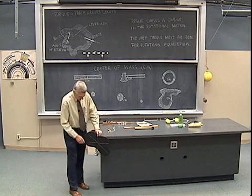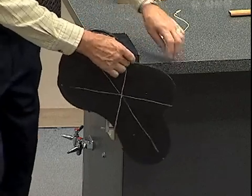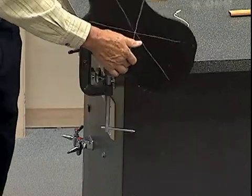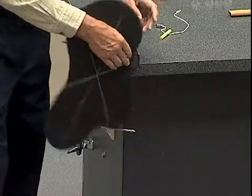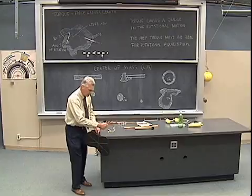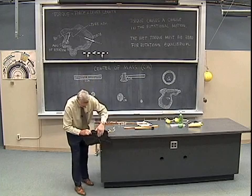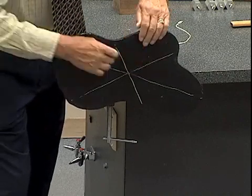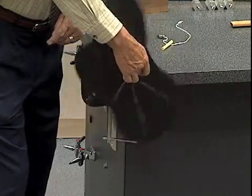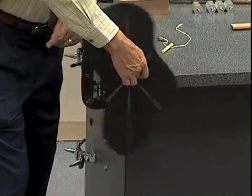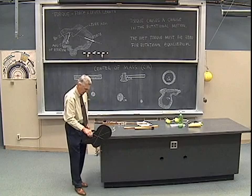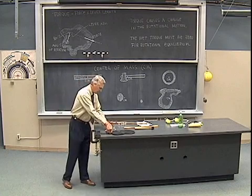If I spin this object about an axis not through the center of mass and let it spin, we see it tends to whip a little bit due to the gravitational torque, which behaves as if acting through the center of mass — first speeding it up and then slowing it down in a rotational sense. But if I support it right at the center of mass and let it rotate about that point, we see it rotates smoothly and doesn't tend to whip. This is one of the principles in balancing automobile tires, for example. So the center of mass has a number of different properties.